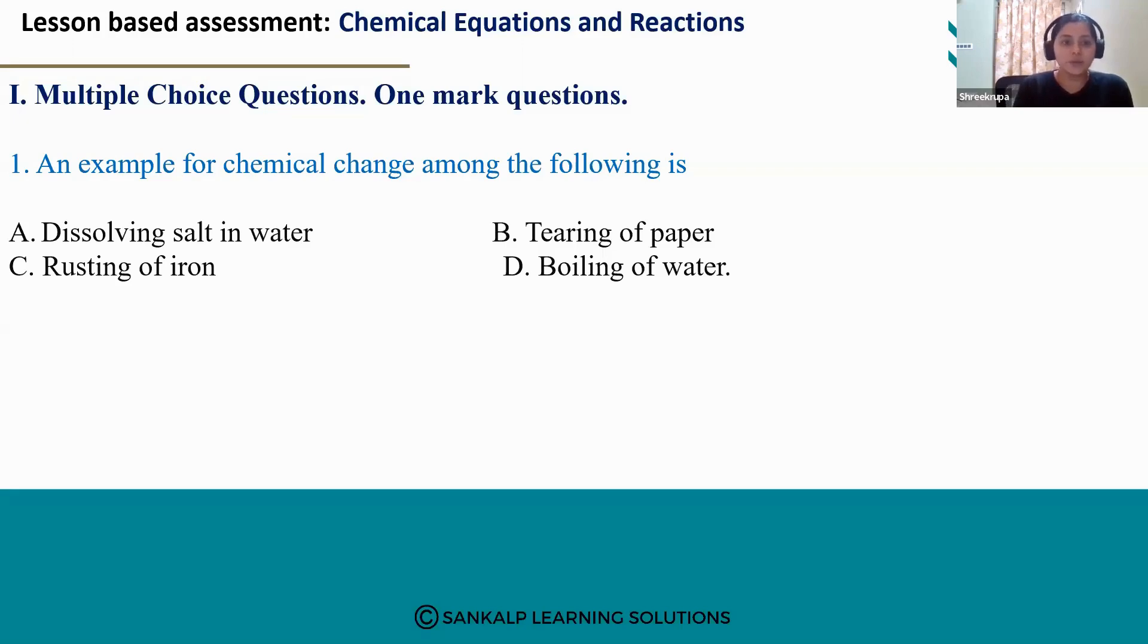But in the third option, rusting of iron, we can observe a chemical change. Because when we expose the iron to air, it gets oxidized.